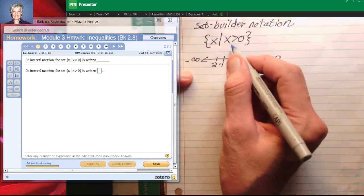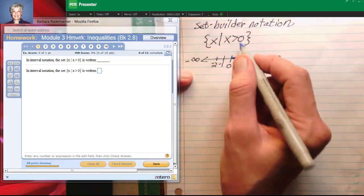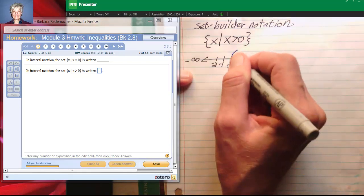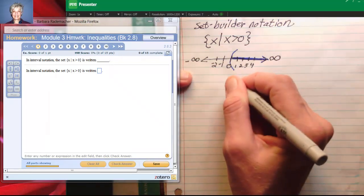Now notice that it doesn't say that x is greater than or equal to zero. So we're not saying that x equals the end point zero. So we're going to use a parenthesis. And that's how we would graph an open interval that goes off to the right forever and ever and ever.